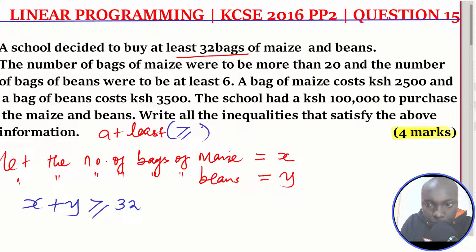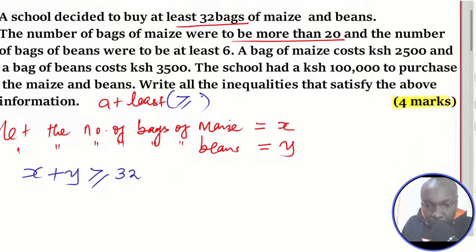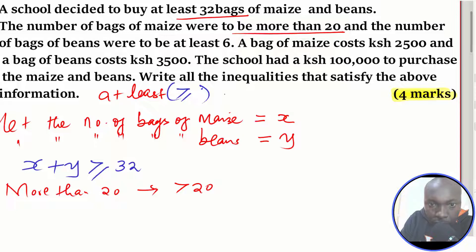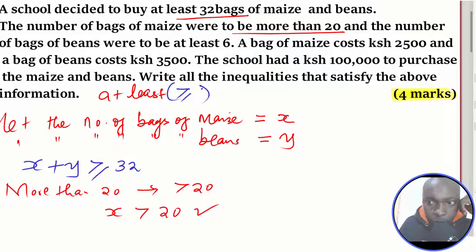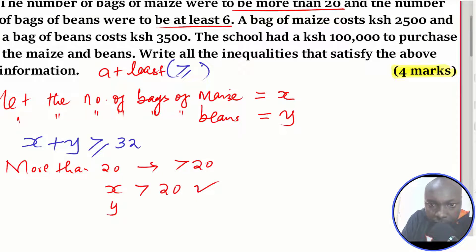The number of bags of maize were to be more than 20. 'More than 20' simply represents greater than 20. Since maize is represented by x, we get x is greater than 20. That is the second inequality. For the third, the number of bags of beans were to be at least 6. Since 'at least' means greater than or equal to, and beans are represented by y, we get y is greater than or equal to 6.